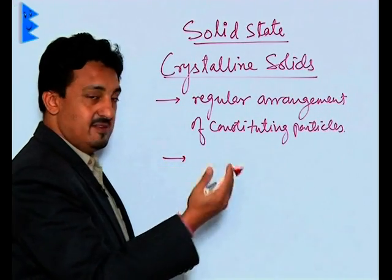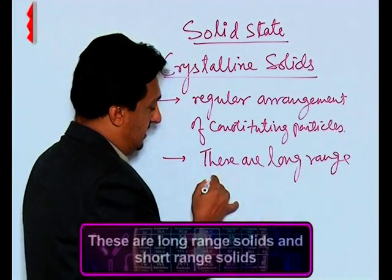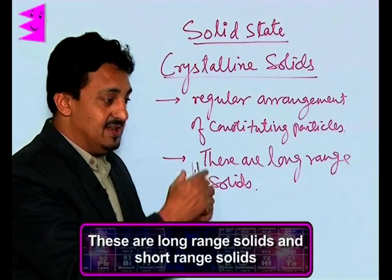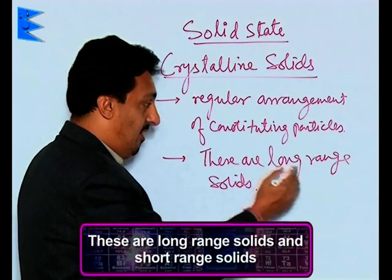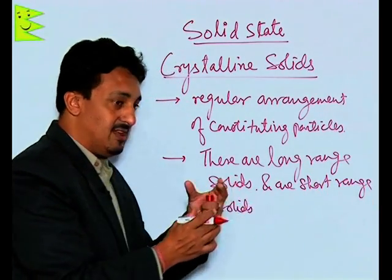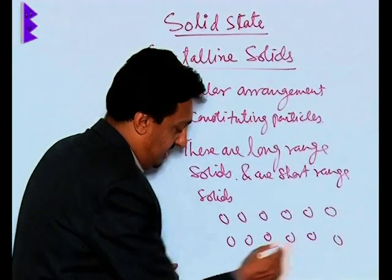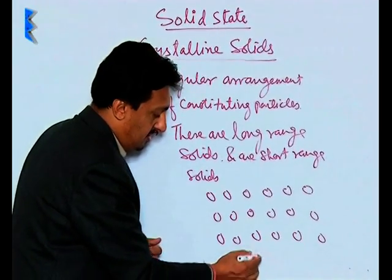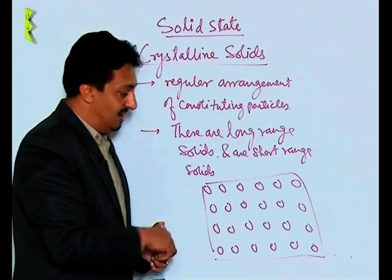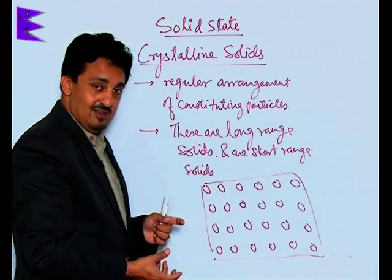The most important feature is that since the arrangement is repeated, crystalline solids are long range solids. Long range means whatever pattern the constituting particles form is repeated over long distances. They can also be short range solids, where some patterns are repeated only over short distances. For example, if these are the constituting particles arranged in a regular fixed pattern, such solids are called crystalline solids.